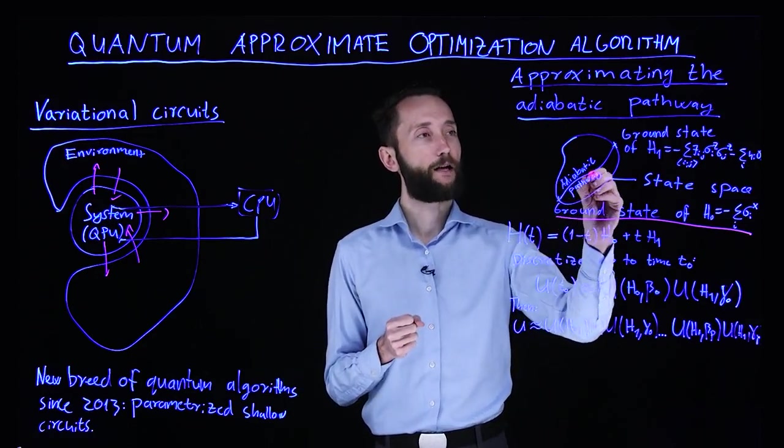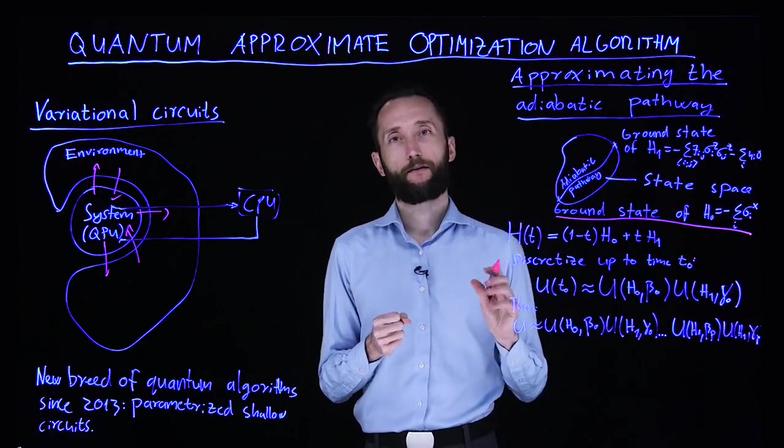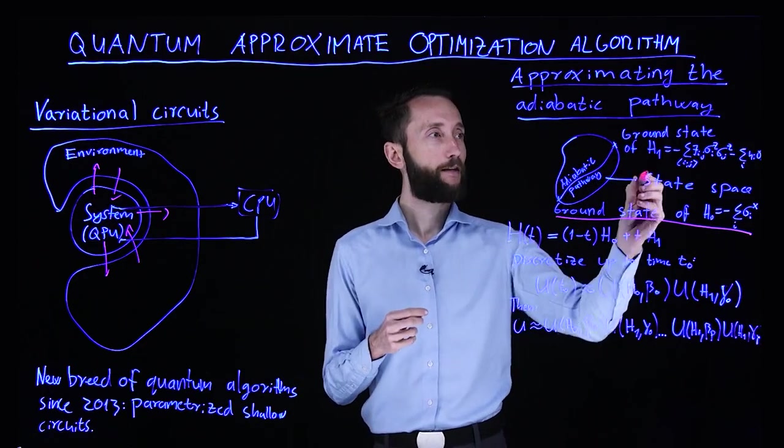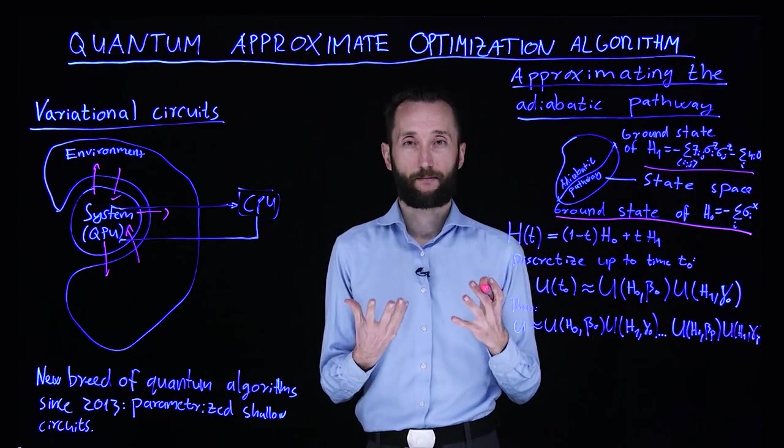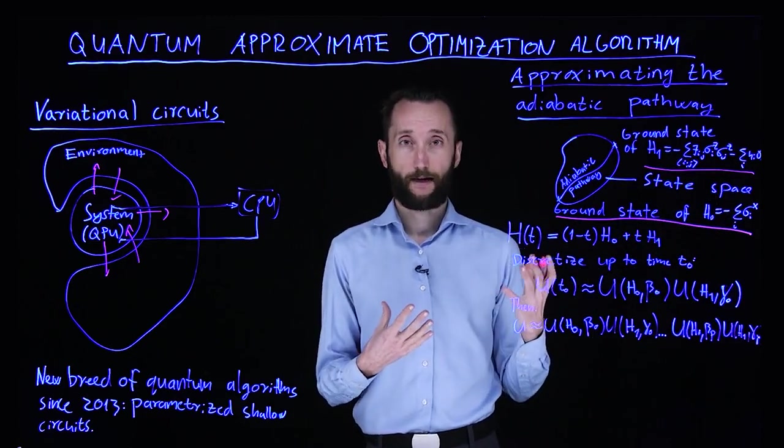Then we follow this adiabatic pathway, and if we do the transition slow enough, we can read out the ground state of the system that we're interested in, for instance, the Ising model.